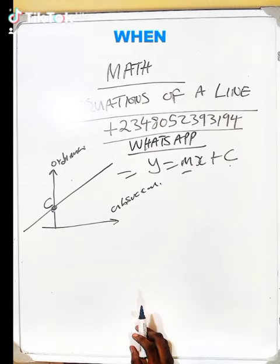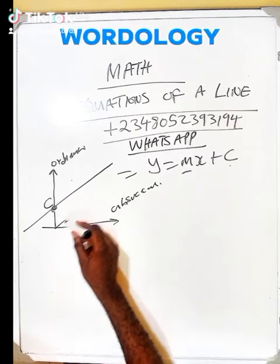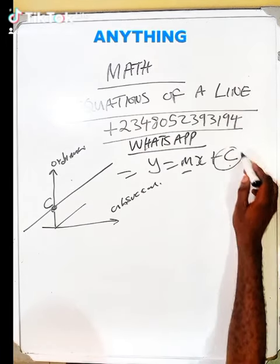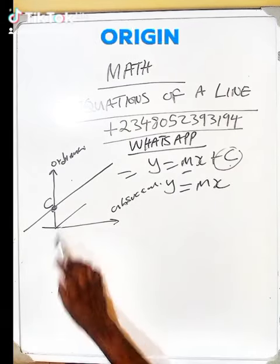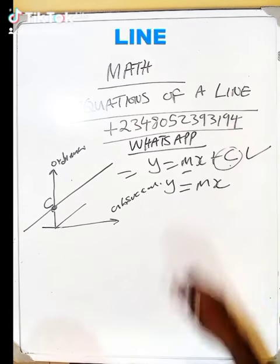That simply means when the line crosses through the origin, there's not going to be any y-intercept. The formula simply becomes y equals mx. That's when it passes through the origin, so this is the first equation of a line.